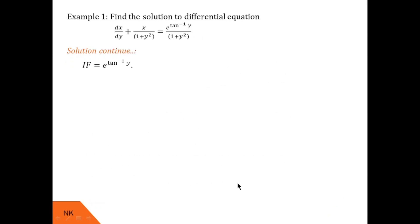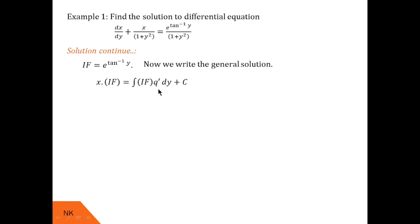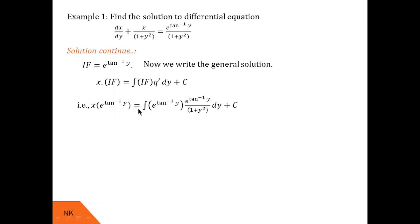Now we find the corresponding solution. The formula is x × (integrating factor) = ∫(integrating factor × q') dy + c. Substituting the integrating factor, we get x · e^(tan⁻¹y) = ∫ e^(tan⁻¹y) × e^(tan⁻¹y) / (1 + y²) dy + c.